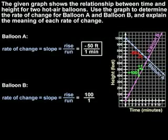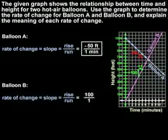A common mistake is to say that the rise is 2 instead of 100, but notice that each mark on the y-axis represents 50 units. So we're actually going from 400 to 500, so our rise is 100.